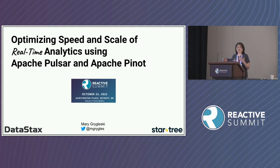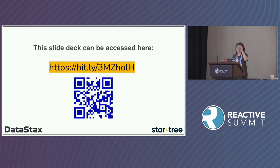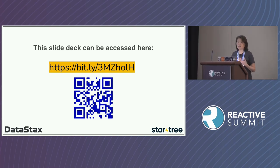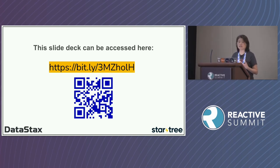I welcome any questions afterwards, both on-site and offline. If you're interested in this slide deck while I'm talking, the QR code is here. DataStax is the company whose flagship product is Apache Cassandra on the cloud — Astra. They've been in business for 10 years, based in California, and about a year and a half ago adopted Apache Pulsar. It's now also a managed cloud platform called Astra Streaming, with Pulsar underneath the hood.